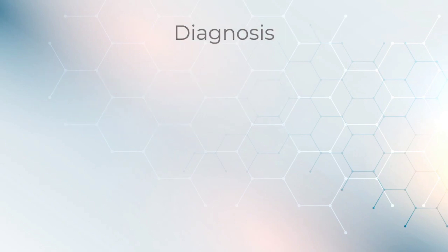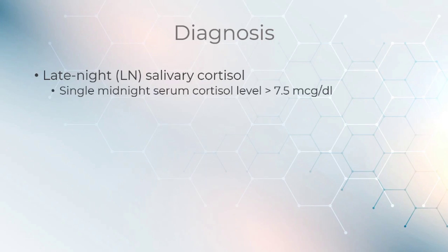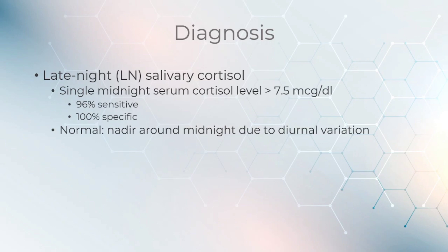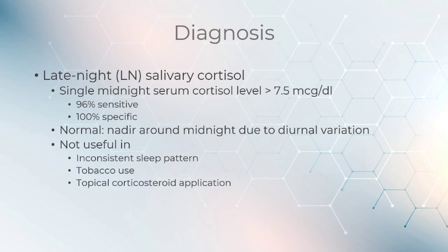To diagnose the condition, late-night salivary cortisol can be measured. A single midnight serum cortisol level higher than 7.5 mcg per deciliter is indicative of Cushing syndrome, and this is up to 96% sensitive and 100% specific. Nadir is observed around midnight due to diurnal variation. However, this test is not useful in patients with inconsistent sleep patterns, tobacco use, or in patients using topical corticosteroid application.